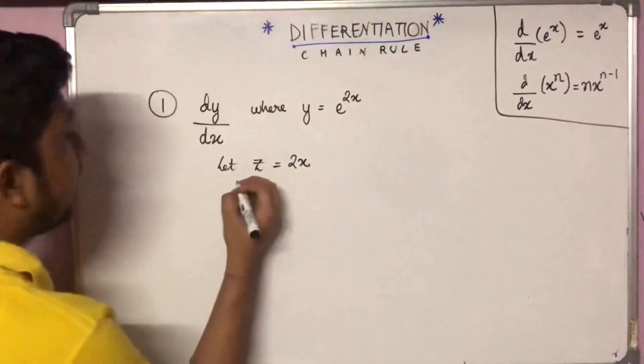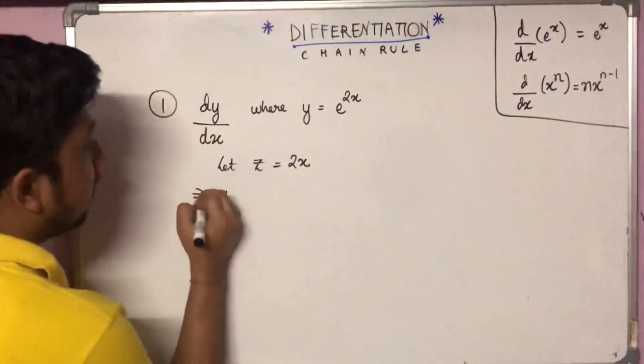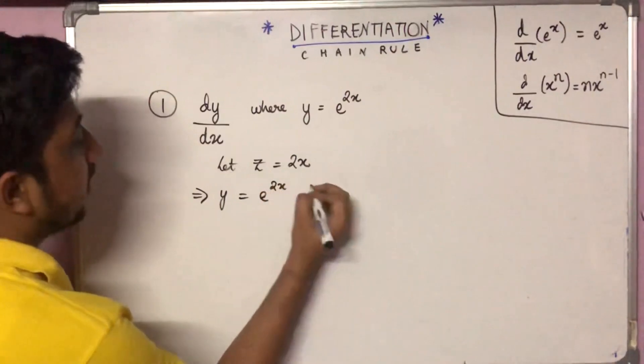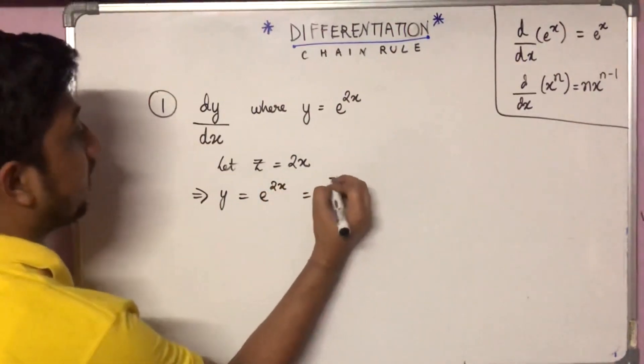Now y becomes y equals e to the power 2x, that becomes equal to e to the power z.